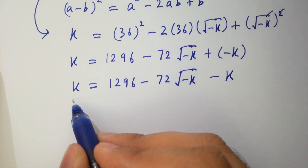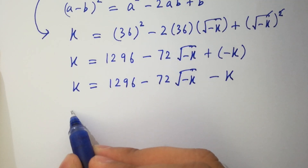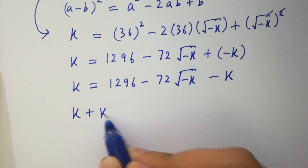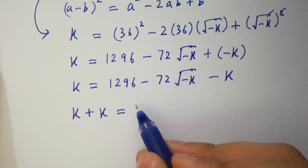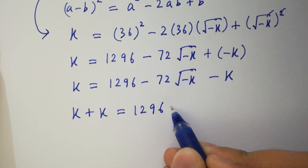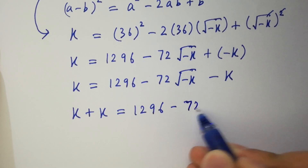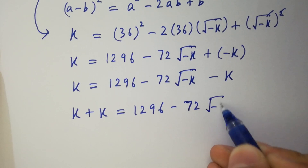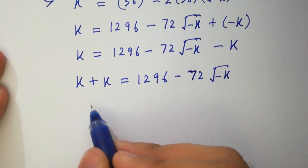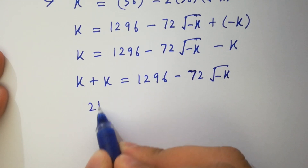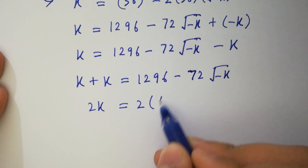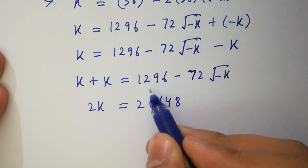We move minus k to the left hand side. k plus k equals 1296 minus 72 square root of minus k. k plus k gives us 2k, and on the right we can factor: 2 times 648 equals 1296, minus 72 square root of minus k.